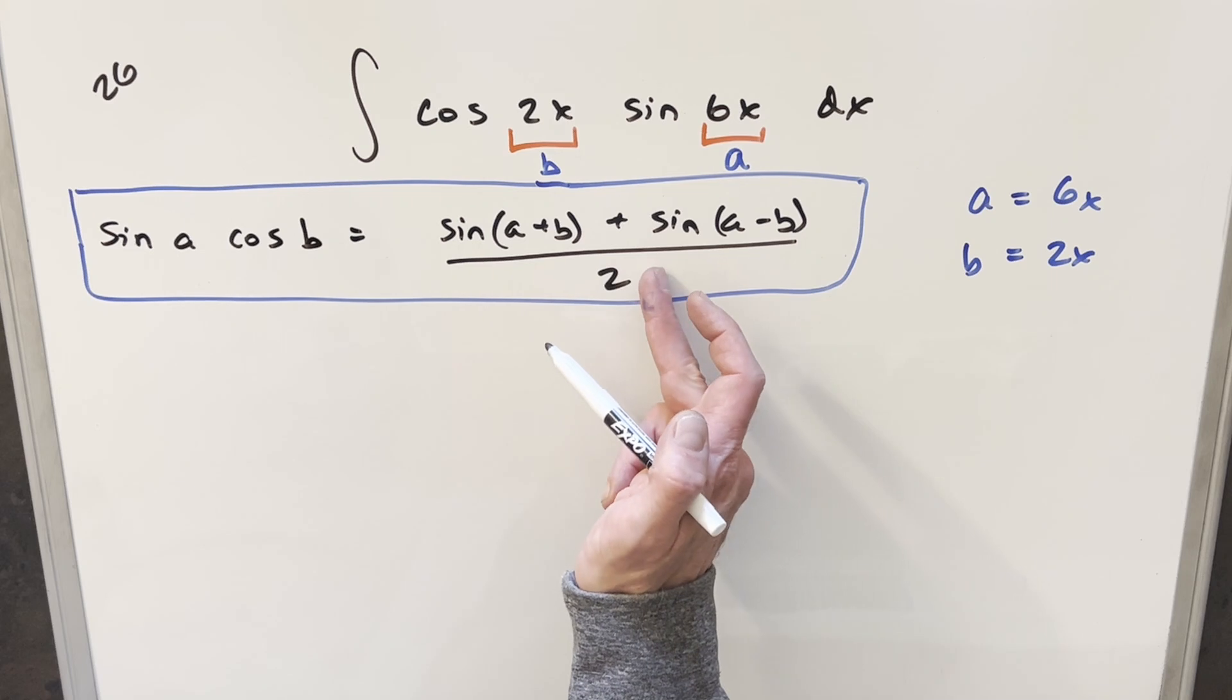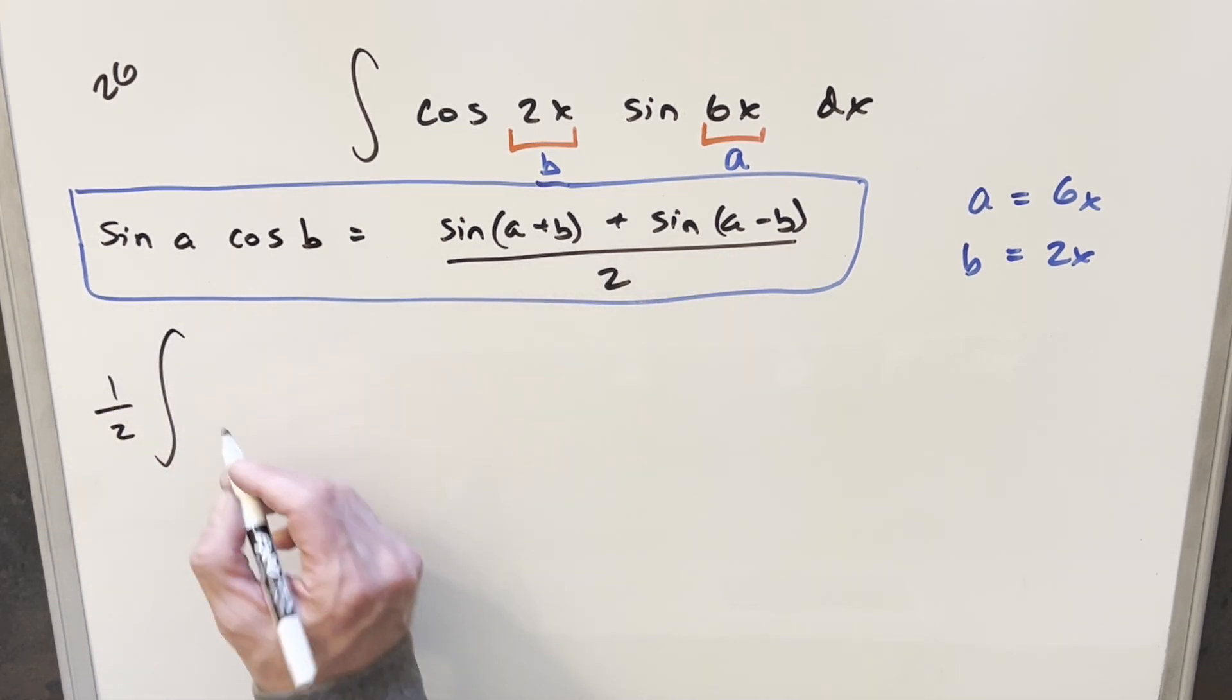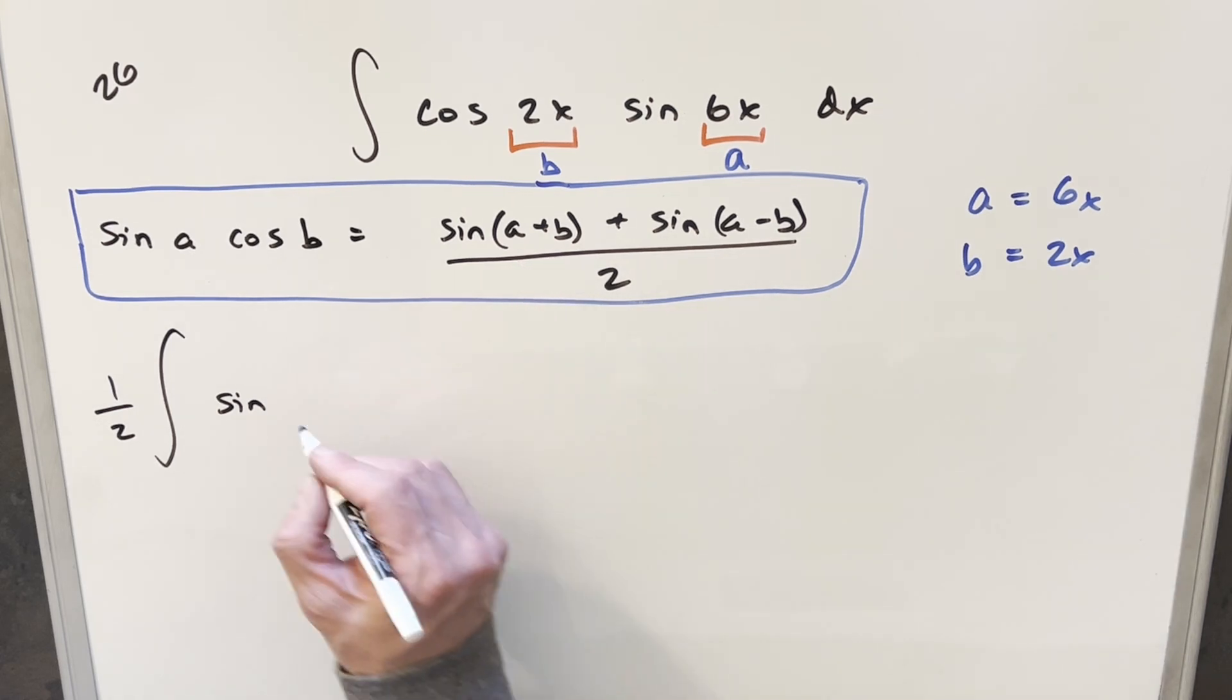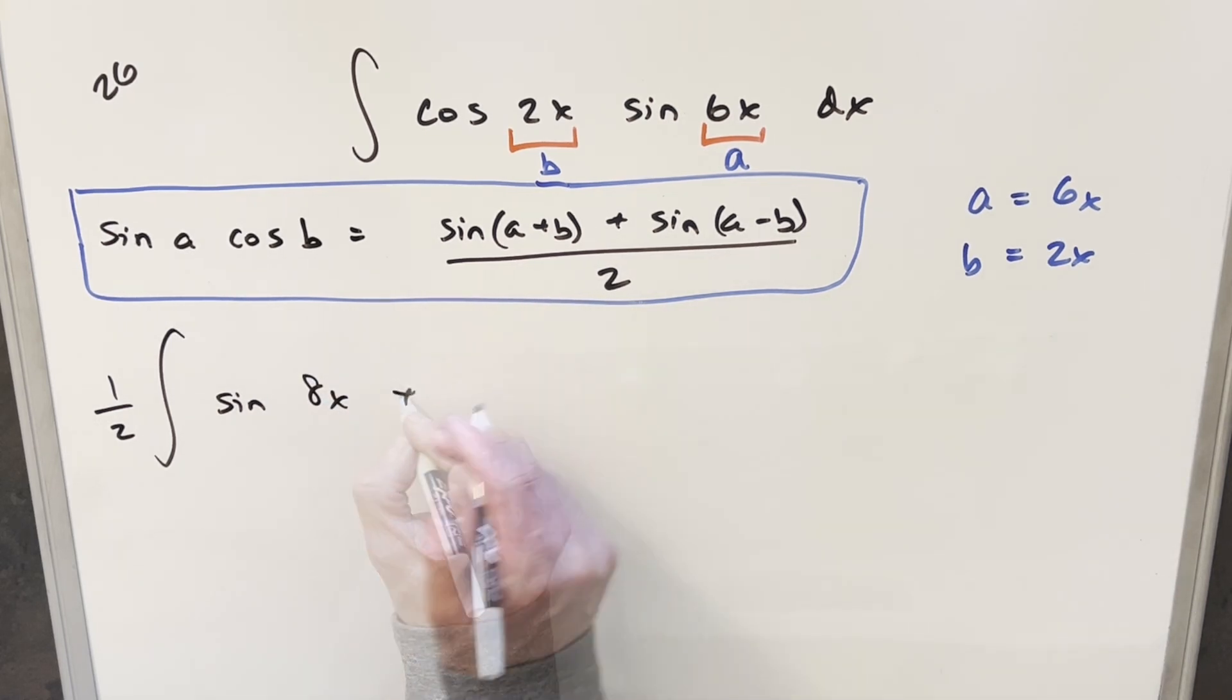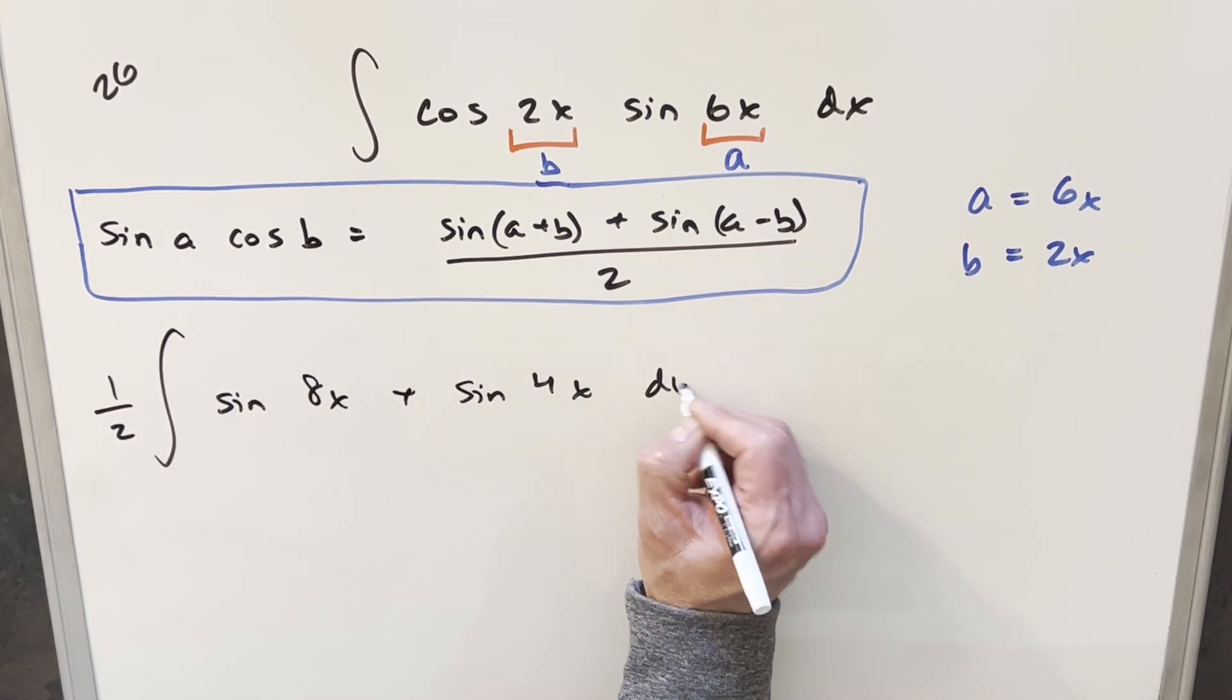Then rewriting our integral in this form, I'm going to take the two in the denominator and bring it out front of the integral and write it as one half. So then using this, we're going to have sine a plus b, a plus b, 6x plus 2x is going to give me 8x. And then for this next piece, sine a minus b is going to be 6x minus 2x, or sine 4x dx.